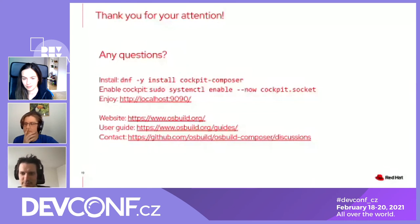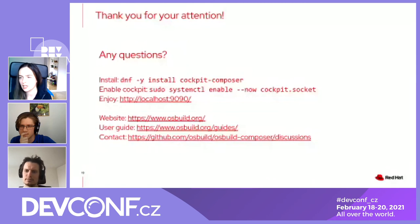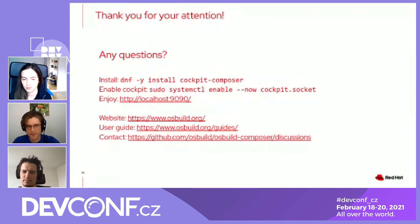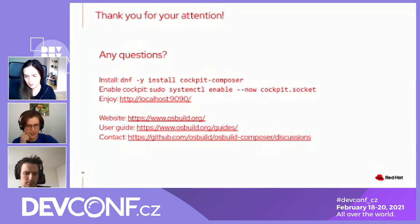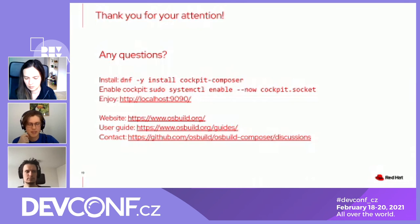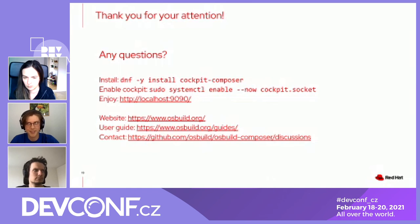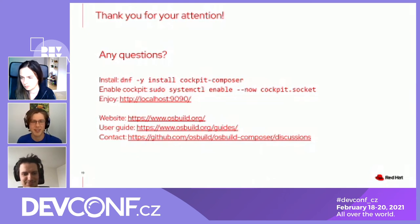From Richard: is the newly built image based on the system running OS Build? In other words, can a Fedora 33 system only build Fedora 33 images? If you are using Composer or Composer CLI, yes, then Fedora 33 can only build Fedora 33. But this is just a limitation of the API. Internally, we are able to build across distributions — for example, building RHEL images on Fedora and Fedora images on RHEL — but it's not currently exposed in the API.